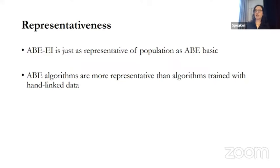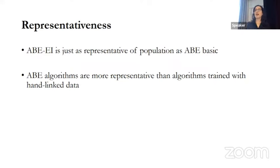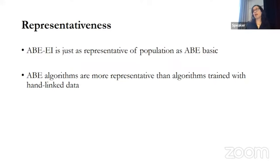We haven't broken things down by subgroup yet, but we're working on a separate paper with Hannah Postel to do exactly that. She worked on improvements for Chinese-Americans, especially because of name switching — where first names could become last names in how they were transcribed. She's very interested in how algorithms work across subgroups, and we're working on that now.